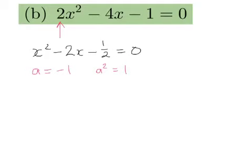Now to turn the negative 1 half into 1, we need to add 3 halves to both sides, or 1 and a half. So we get x squared minus 2x plus 1, so that's a square, and we add 1 and a half or 3 halves.